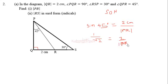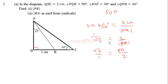The next thing we do is reciprocate both sides, so that will be √2 over 1 equals PR over 2. We can also decide to cross multiply. Multiplying both sides by 2, we get 2√2 equals PR. Therefore PR is equal to 2√2 centimeters.